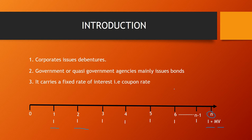When interest is paid twice a year, the first interest is paid at the end of the first six months, the second at the end of one year, the third at the end of one and a half years, the fourth at the end of the second year, the fifth at the end of two and a half years, and then the sixth interest at the end of the third year, and the process goes on.